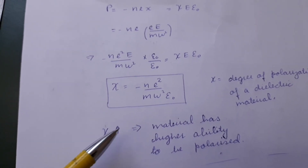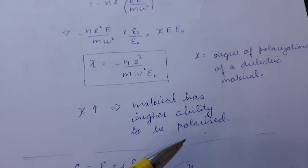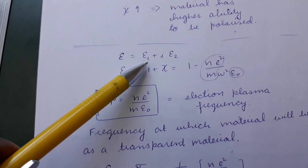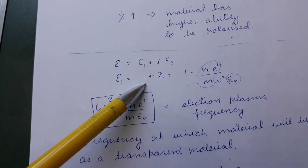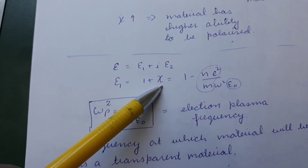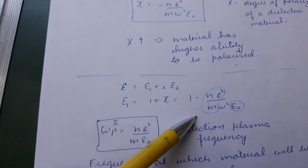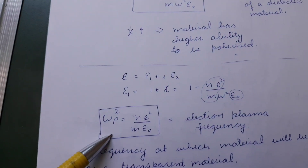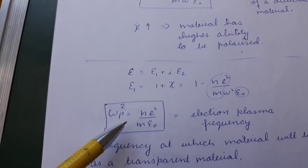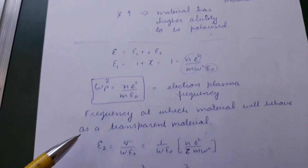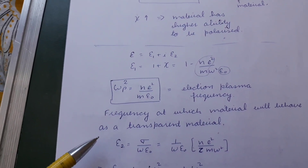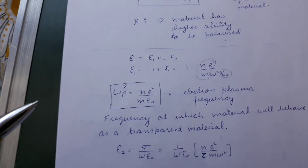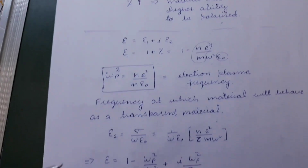A higher susceptibility means the material has a greater ability to be polarized. The real part of permittivity is written in terms of susceptibility, and substituting our expression we define the quantity ne²/(mε₀) as the plasma frequency squared — ωₚ². This is the electron plasma frequency, the frequency at which the material will absorb incident photons.